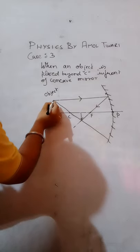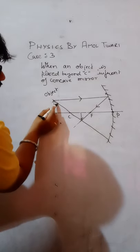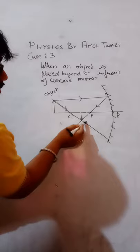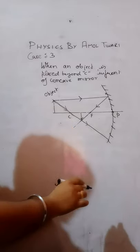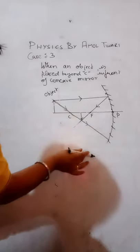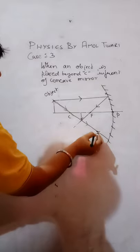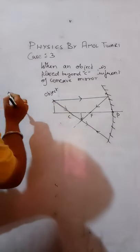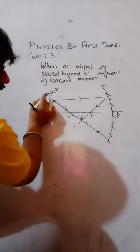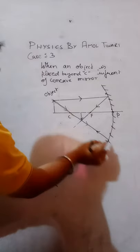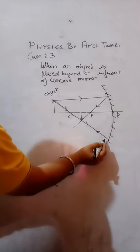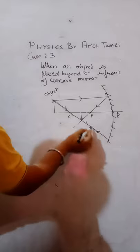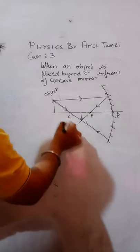Why? Because a light ray which is passing through the center of curvature is behaving like a normal. So when it's incident on the mirror, again it will bounce back from the same path. So this light ray is the incident ray and this light ray is the reflected ray also.